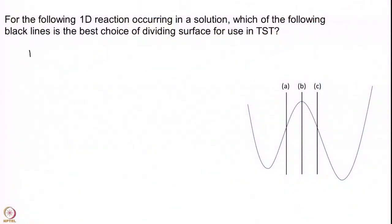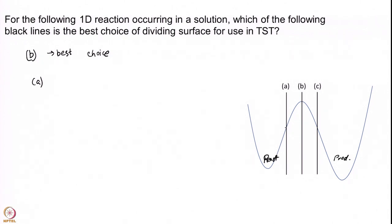The correct answer is B — this is the best choice. You have to look at the assumptions made in transition state theory. This is what this question is about. At A: this is my reactant, this is my product. If you draw the dividing surface at A, you can have trajectories that are going up and they have a higher chance of reverting back compared to B.